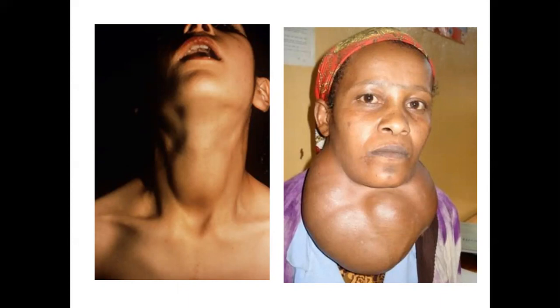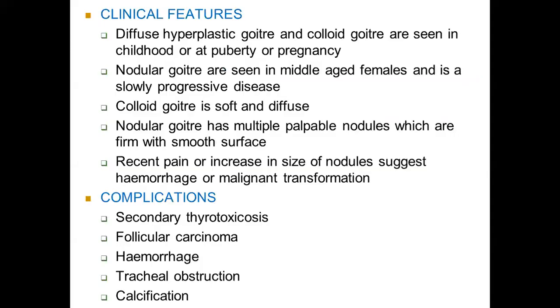On the left is the diffuse hyperplastic colloid goiter; on the right is a huge multinodular goiter. Regarding clinical features: diffuse hyperplastic goiter or colloid goiter is seen during childhood, around puberty, or around pregnancy. Nodular goiter is generally seen in middle age, usually affects females, and is a slowly progressive disease, developing over 5 to 15 years to attain a large size. On palpation, colloid goiter is generally soft with diffuse enlargement of the gland.